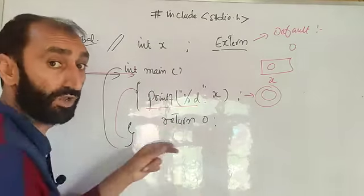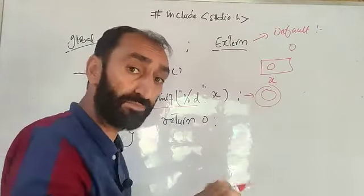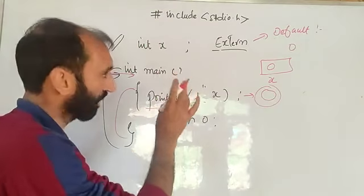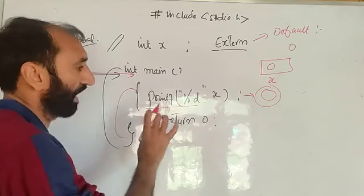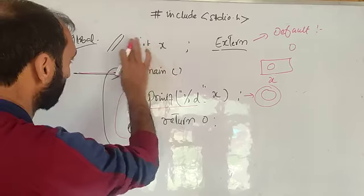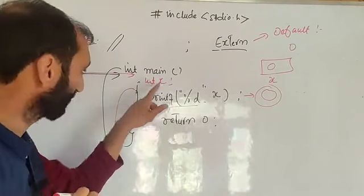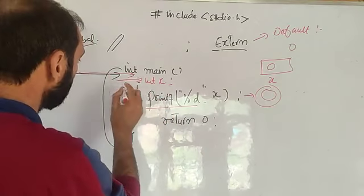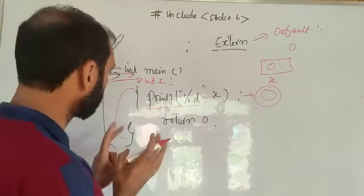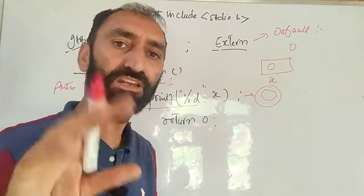The variable is global, and global variables come under the external storage class. By default, the value of an external variable is 0, so it will print 0. Now, if instead I declared `int x` inside the main function, the storage class would be auto, because if you do not specify a storage class for a local variable, by default it is auto.